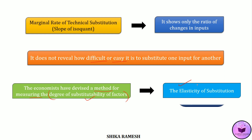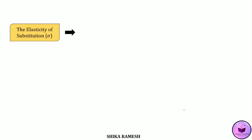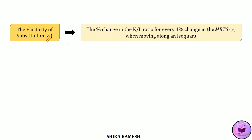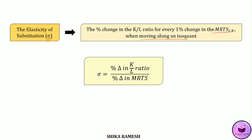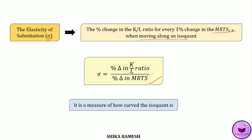This concept was initially put forward by Sir John R. Hicks. The elasticity of substitution, represented as sigma, shows the percentage change in the K/L ratio for every 1% change in the marginal rate of technical substitution when moving along an isoquant. The formula for calculating elasticity of substitution is: sigma is equal to percentage change in the capital-labor ratio divided by percentage change in the marginal rate of technical substitution. The elasticity of substitution not only represents the ease of substitutability between factor inputs, but also the curvature of an isoquant.